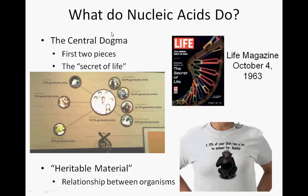What do nucleic acids do? They make up the first two-thirds of the central dogma of biology — they encode the genes and work on transcribing them. When nucleic acids were first discovered, specifically DNA, it was called the secret of life, on the cover of Life Magazine. DNA was first recognized as a heritable material that generated and described relationships between organisms.